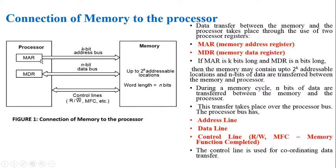Since MDR is n bits wide, we can transfer n bits of data at a time. This transfer takes place over the processor bus. The processor bus has subdivisions: address lines for transferring address information, data lines for transferring data (memory words), and control lines for transferring control information such as whether to perform a read or write operation.